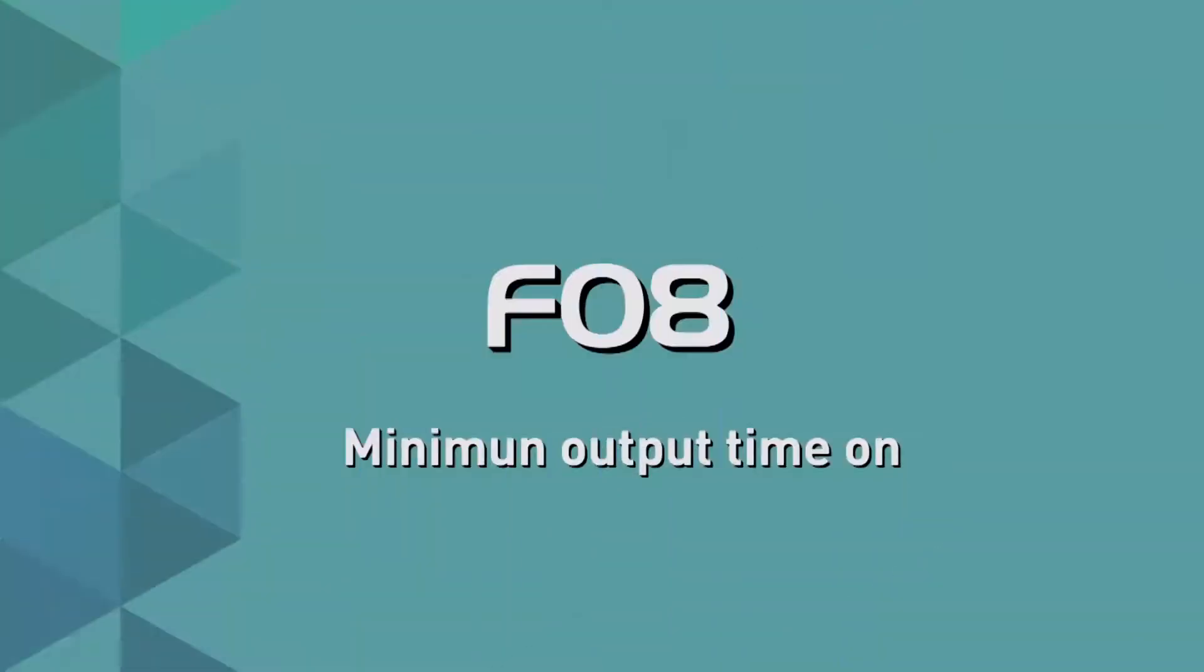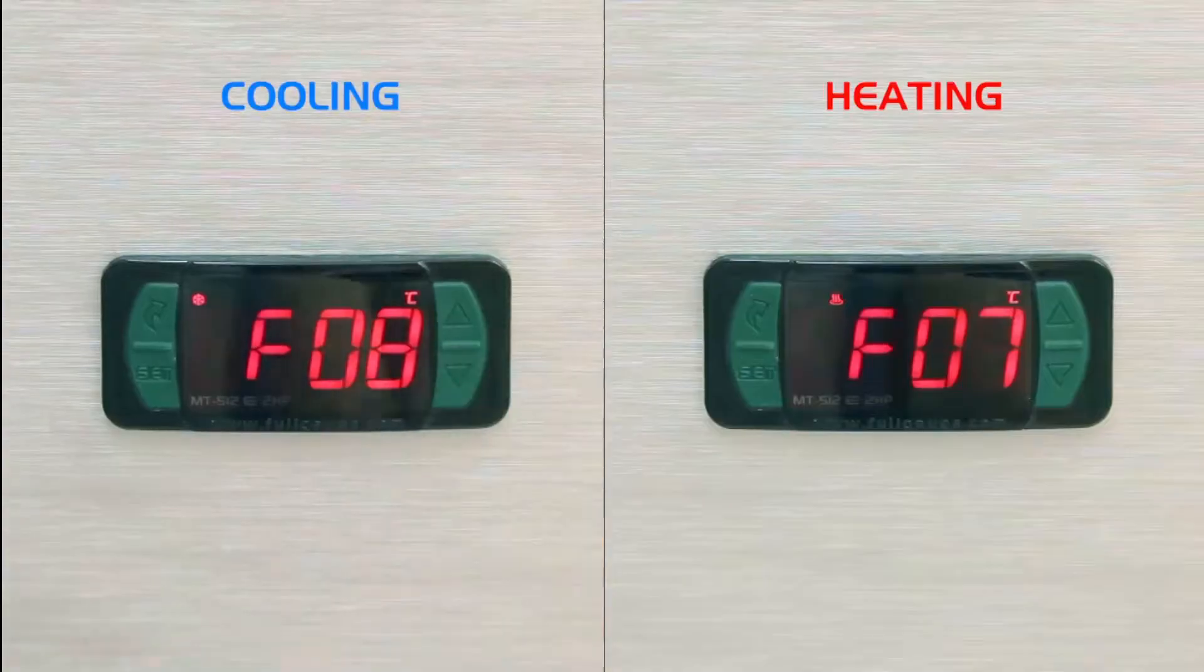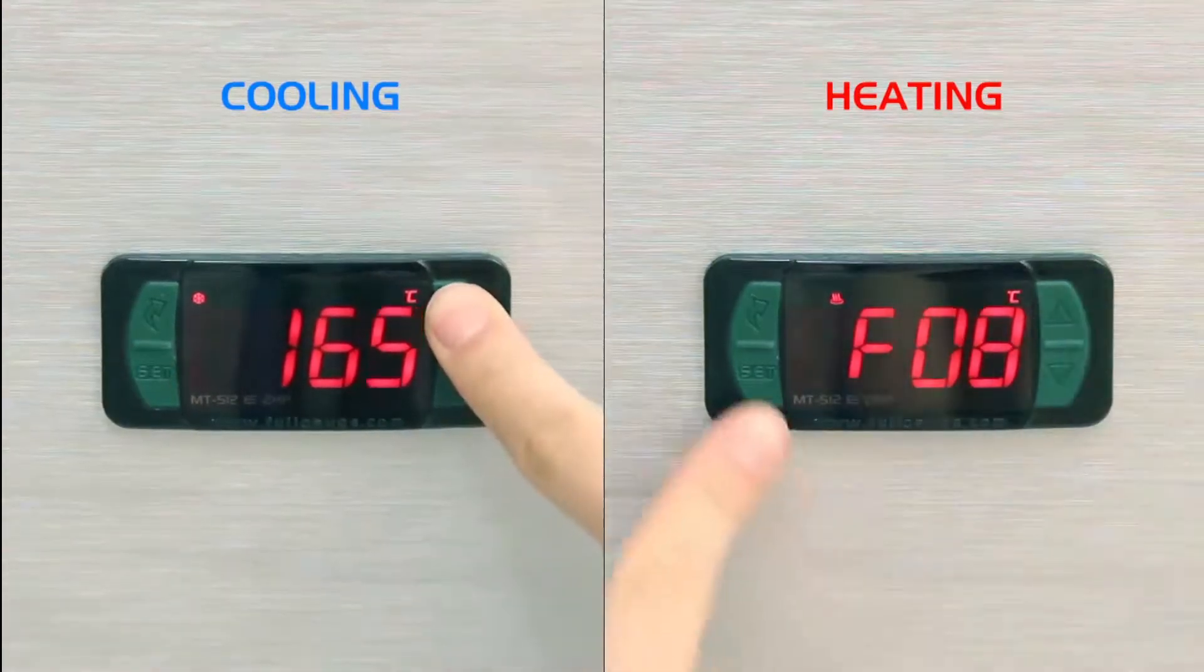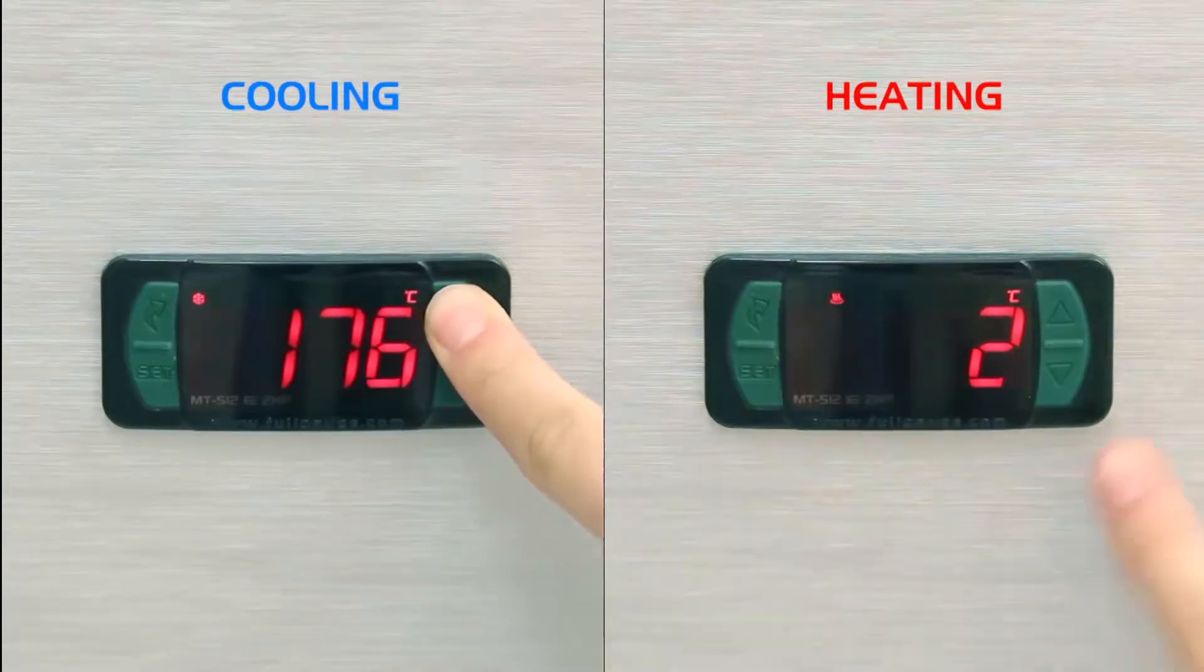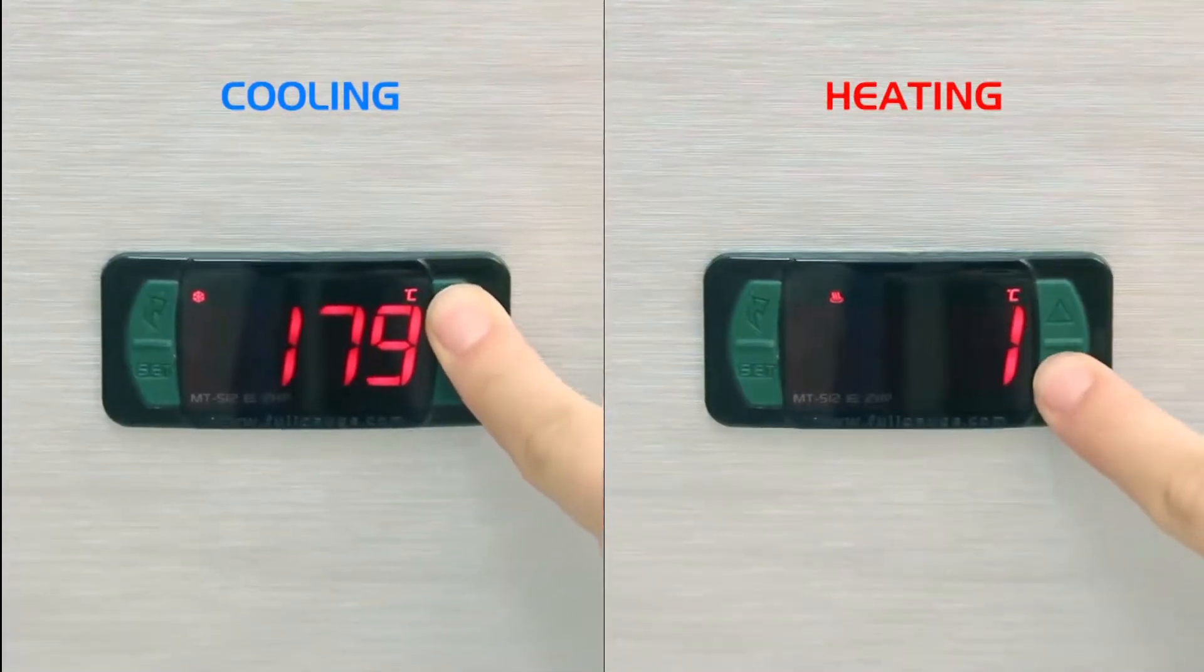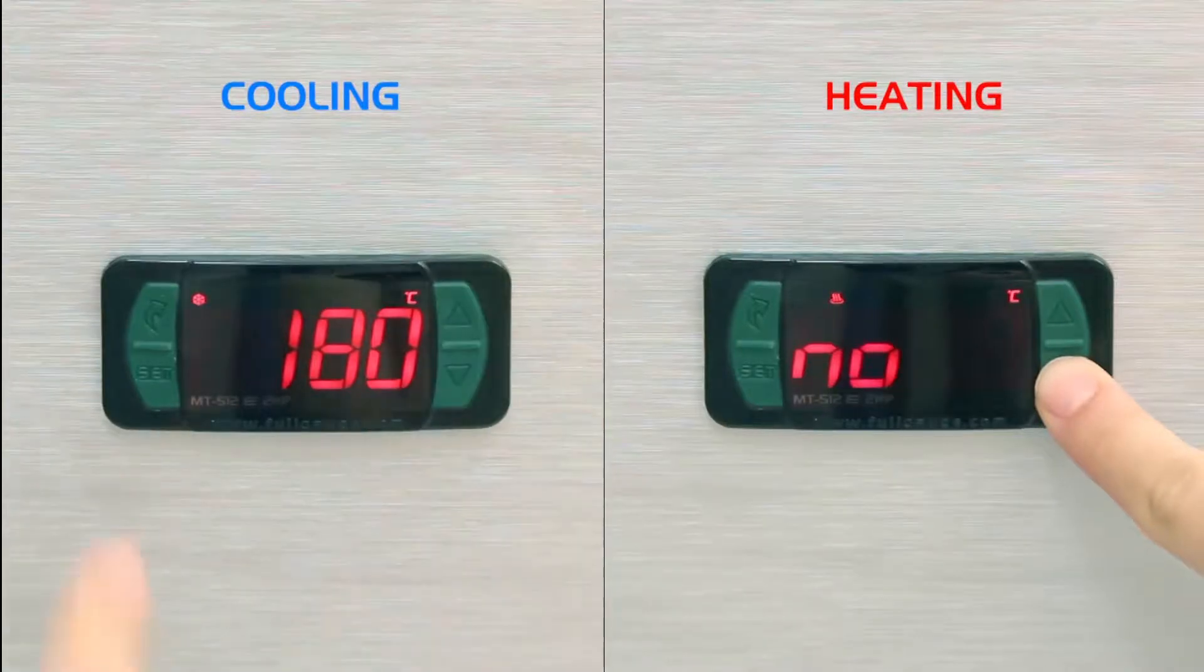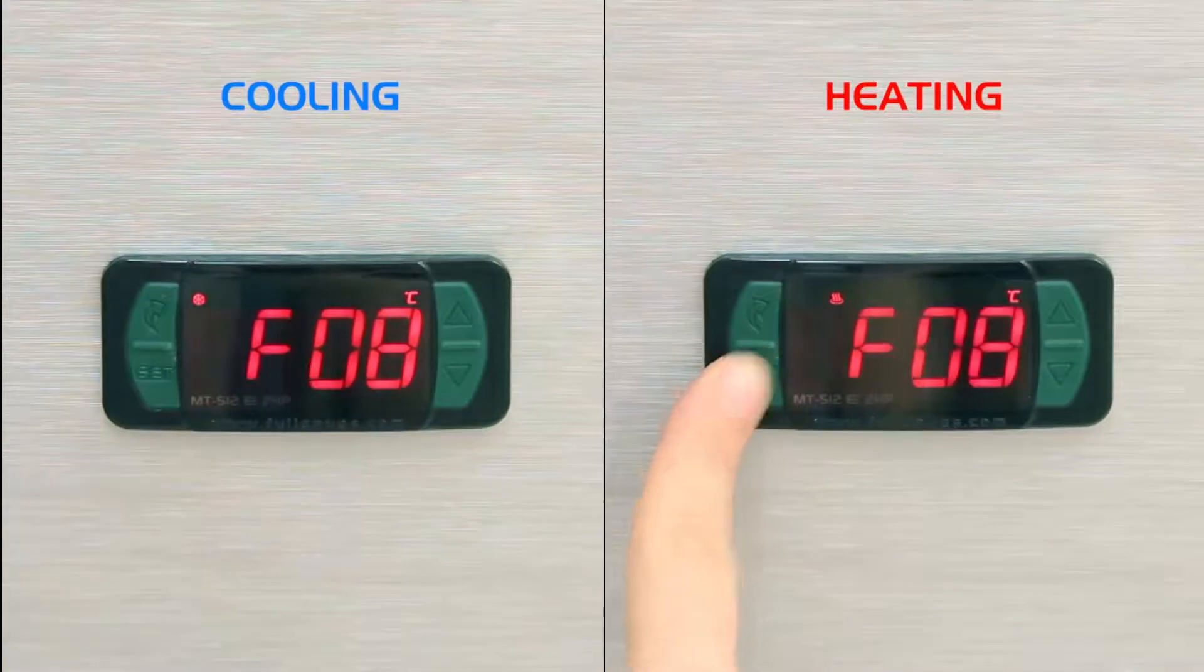F08 Minimum Output On Time: It is the minimum time in which the controller relay remains on after the last start. The goal is to avoid repetitive disconnections. In the cooling example, we opted for 180 seconds, and in the case of heating, we adopted a minimum time, selecting the No symbol.